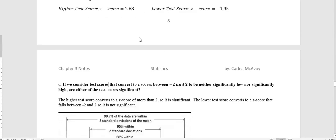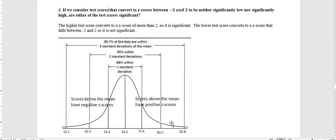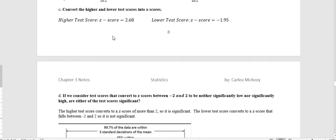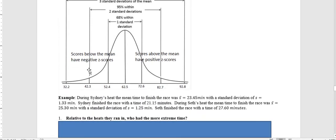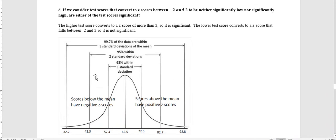The higher test score has a z-score of more than 2. That was 2.68, so that one is significant. But the lower test score had a z-score that was negative 1.95, and anything back to negative 2 is okay. So it's not significant. It falls within that range of scores that we would consider to be not unusual.